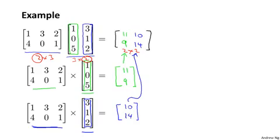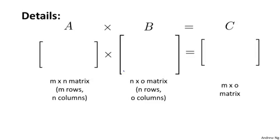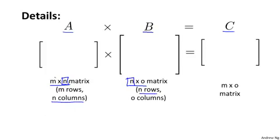That was the mechanics of the calculation. Let's look at the details. I have a matrix A and I want to multiply it with a matrix B; the result will be some new matrix C. You can only multiply matrices whose dimensions match: A is an M by N matrix, and you multiply it by an N by O matrix. This N must match — the number of columns in the first matrix must equal the number of rows in the second. The result will be an M by O matrix. The previous video was the special case of O equal to one, i.e., B being a vector.